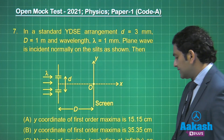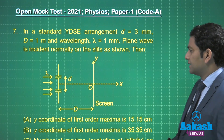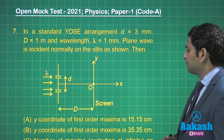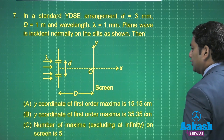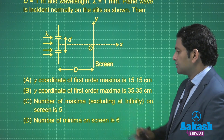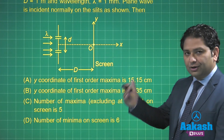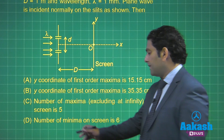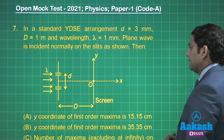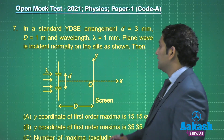In a standard YDSE arrangement, d equals 3 millimeter, capital D is 1 meter, and wavelength is given. A plane wave is incident normally. We need to comment on the first maxima, the number of maxima excluding those at infinity, and the number of minima. This looks straightforward, but there is a big twist in this story.